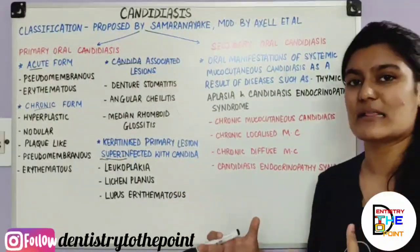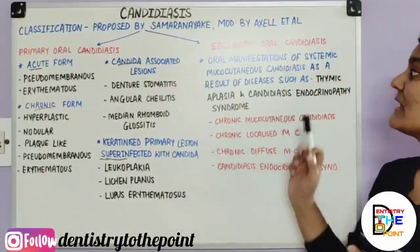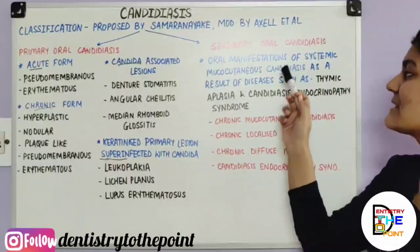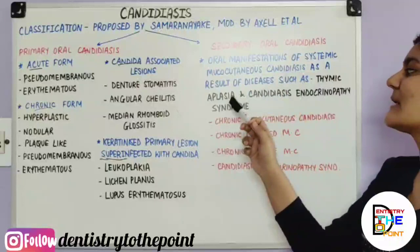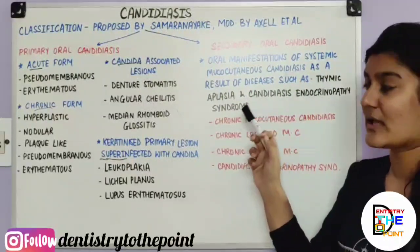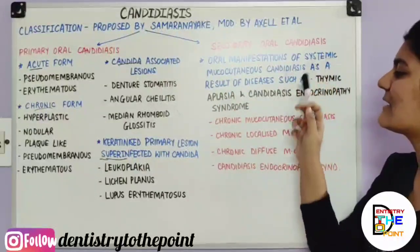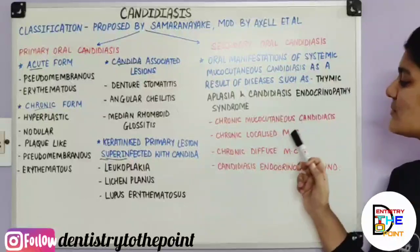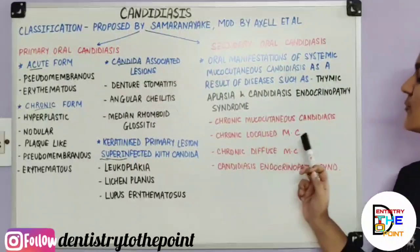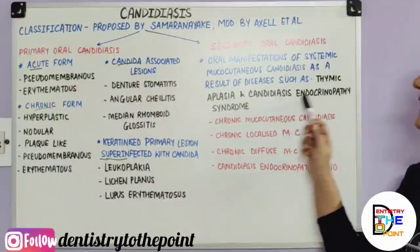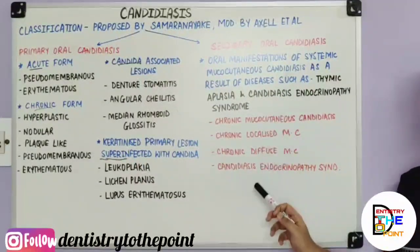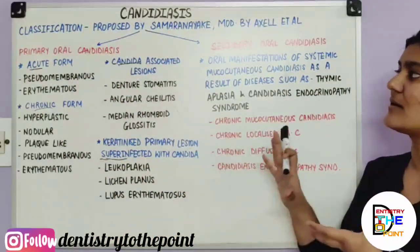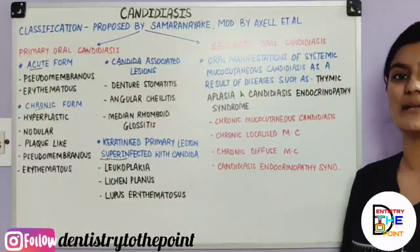In secondary oral candidiasis, you have oral manifestations of systemic mucocutaneous candidiasis as a result of diseases such as thymic aplasia and candidiasis endocrinopathy syndrome. The various forms of systemic mucocutaneous candidiasis include chronic mucocutaneous candidiasis, chronic localized mucocutaneous candidiasis, chronic diffuse mucocutaneous candidiasis, and candidiasis endocrinopathy syndrome. Each of these will be dealt with separately in detail.